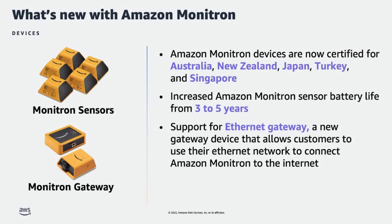Some of our customers had network connectivity protocols that required a wired gateway device. To address these needs, we launched the Monitron Ethernet gateway. Customers can now use the Ethernet gateway to facilitate the transfer of data collected by the Amazon Monitron sensors to AWS using their Ethernet network. The Ethernet gateway joins the Wi-Fi gateway that was available at launch, giving customers even more options for Amazon Monitron internet connectivity.